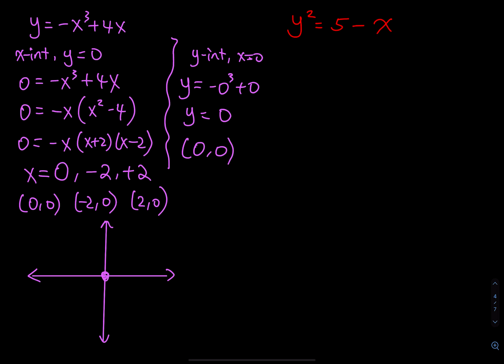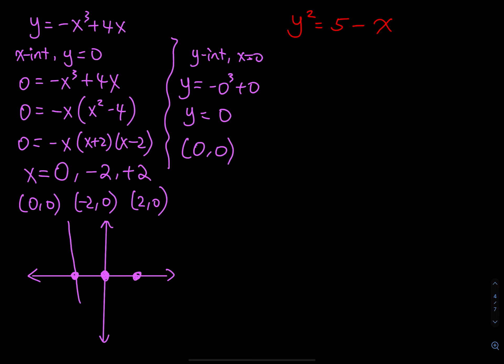The graph has intercepts at the origin, at positive 2, and at negative 2. It goes down, then up, then down — a cubic curve shape passing through those three x-intercepts.